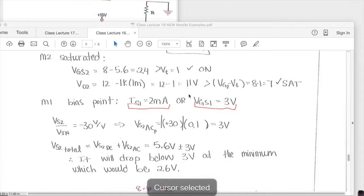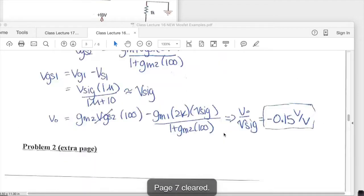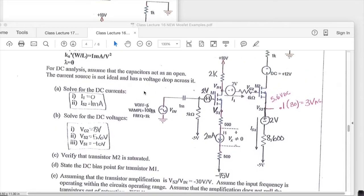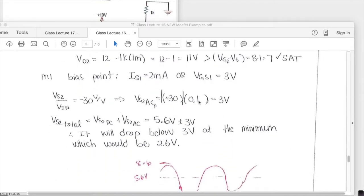The last part of this problem asked for you to find if there is a given amplification and in this case the amplification is from VS2 to the input of minus 30 volt per volt. Assume that the input frequency also keeps the circuit operating in that correct range and that the amplification does not pull the transistor out of saturation, will VS2 ever be 3 volts, why or why not? So we need to look at the DC value and add on now this AC consideration.